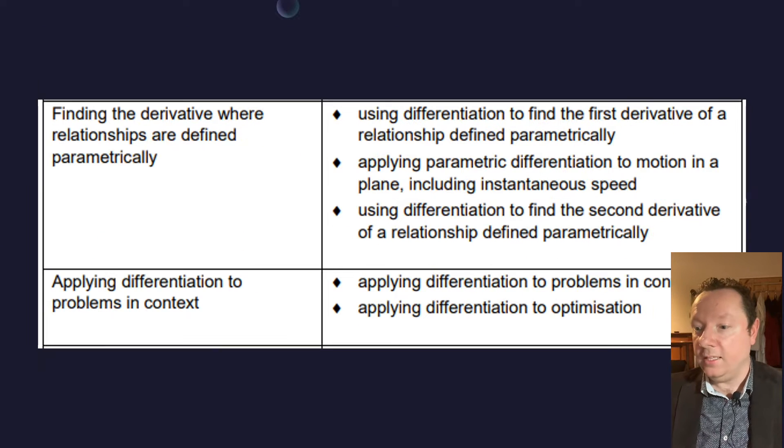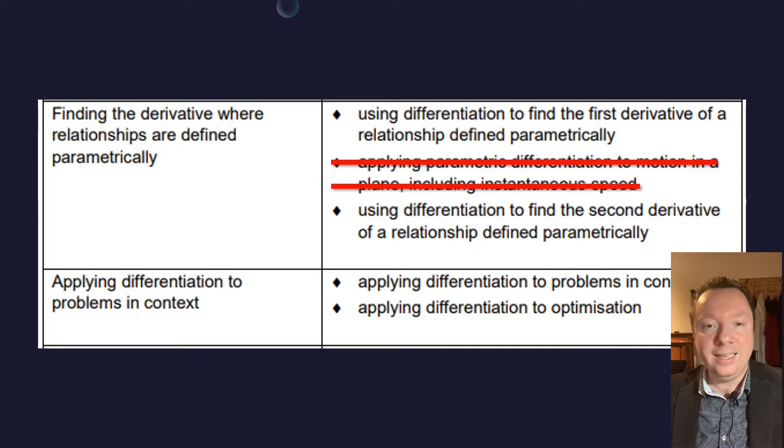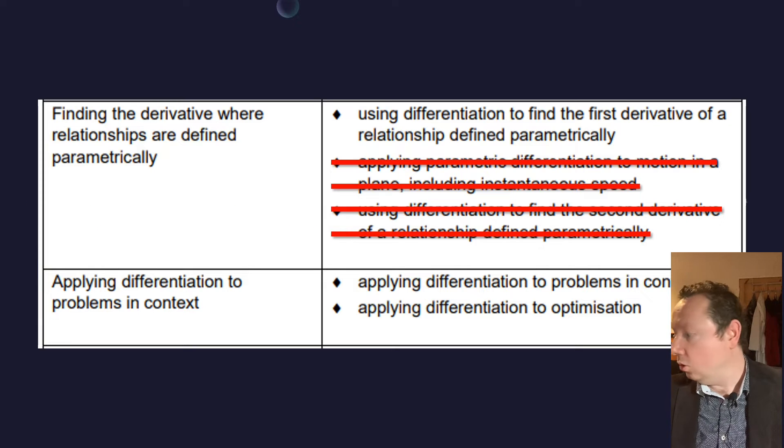We have got finding the derivative where the relationship is parametric differentiation, essentially, we're talking about here. The second point, applying parametric differentiation to motion in a plane, instantaneous speed, that is gone. And the third point, using differentiation to find the second derivative of the relationship defined parametrically, that is also gone.